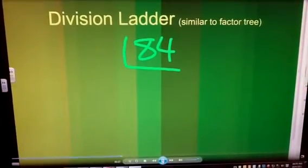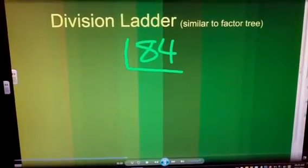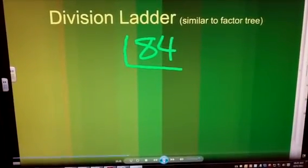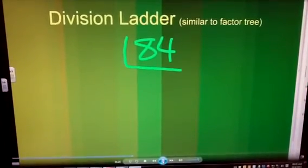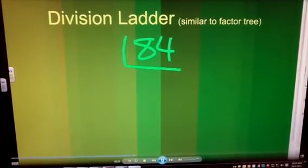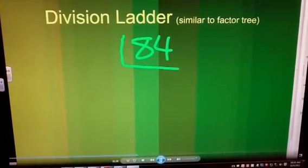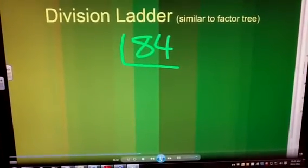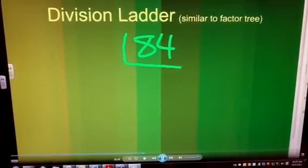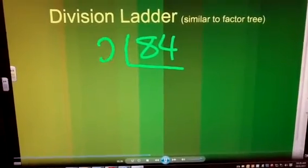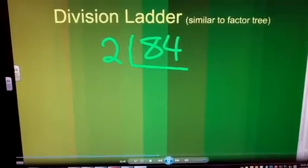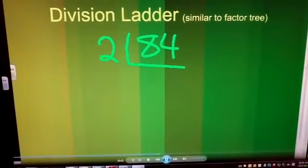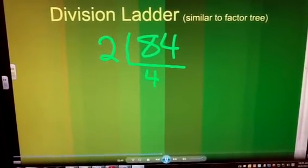The first thing I want to think of is the lowest prime number, which is two, and is this number divisible by two? You have to recall your divisibility rules and think, does this number end in an even number? Zero, two, four, six, or eight. And it does end in a four, which is an even number. Therefore, 84 divided by two would equal 42.